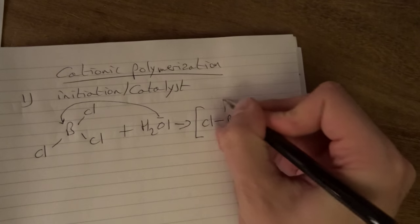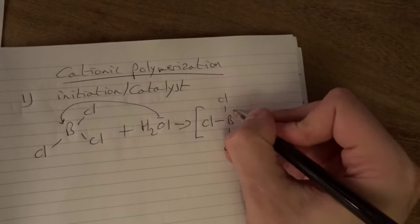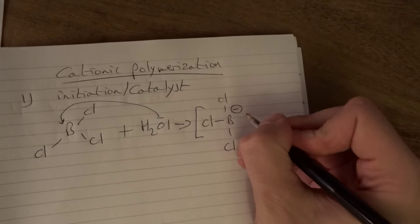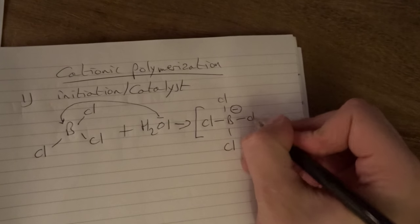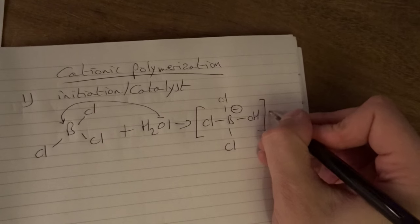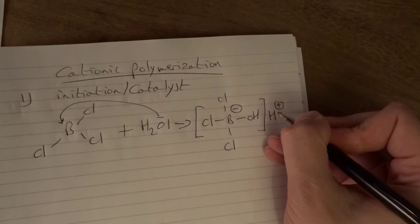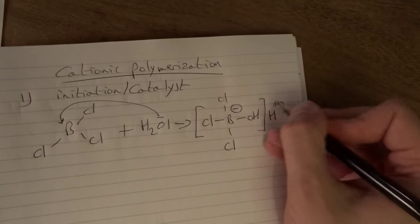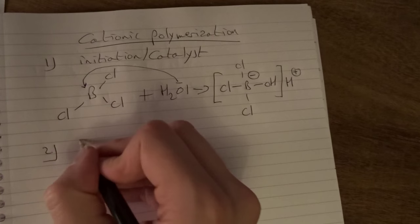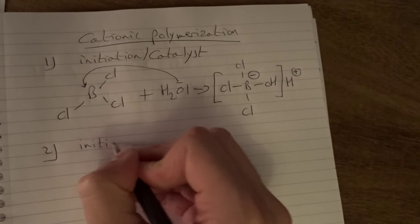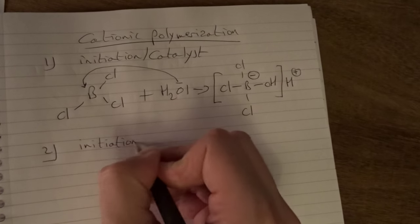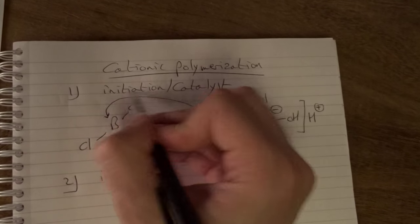It will look like this. Here we get a negative charge and here we get the OH group of the H2O plus a proton, and this proton is actually the initiator of the reaction. So the initiation step.